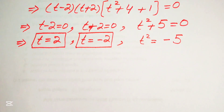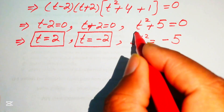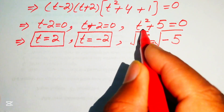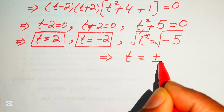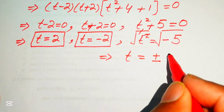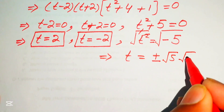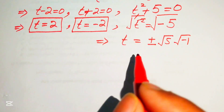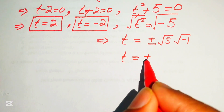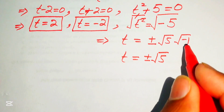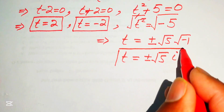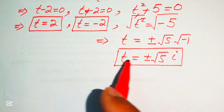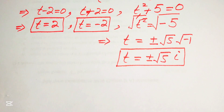To find t from the third case, we take the square root of both sides. The square root of minus 5 can be written as square root of 5 times square root of minus 1, and square root of minus 1 equals iota. So t equals plus or minus square root of 5 times iota. These are the two complex roots, while t equals 2 and t equals minus 2 are the two real roots — giving all four roots of the equation.